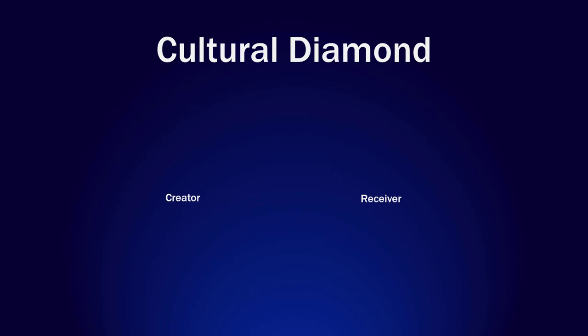The cultural diamond also enables us to realize that the relationship between creator and receiver may not always be direct. Instead, it often occurs through the object created by the creator. In our current age of mass production, most of us — especially if we purchase our cultural objects online — never meet or know about the creator. Our relationship with the creator is, in this case, indirect, filtered through the ways in which we receive the cultural object itself.